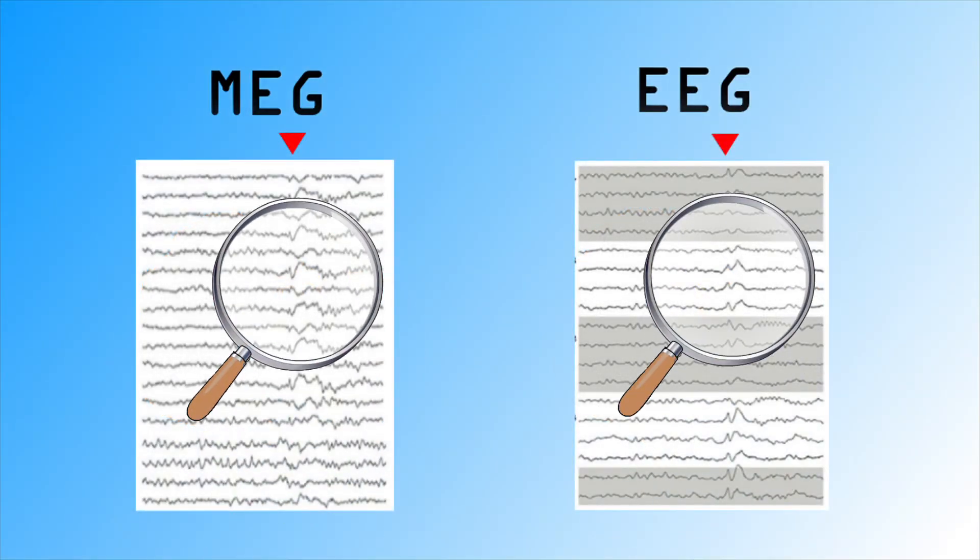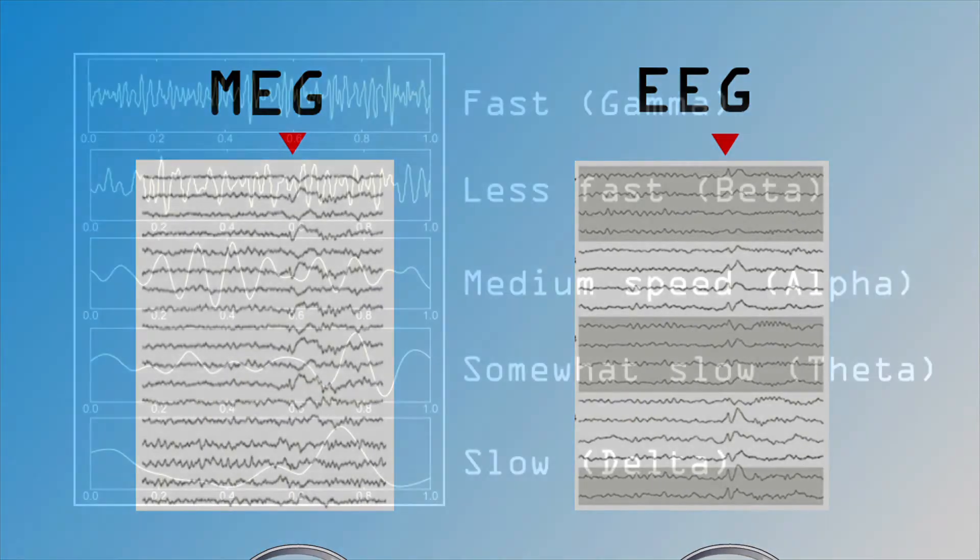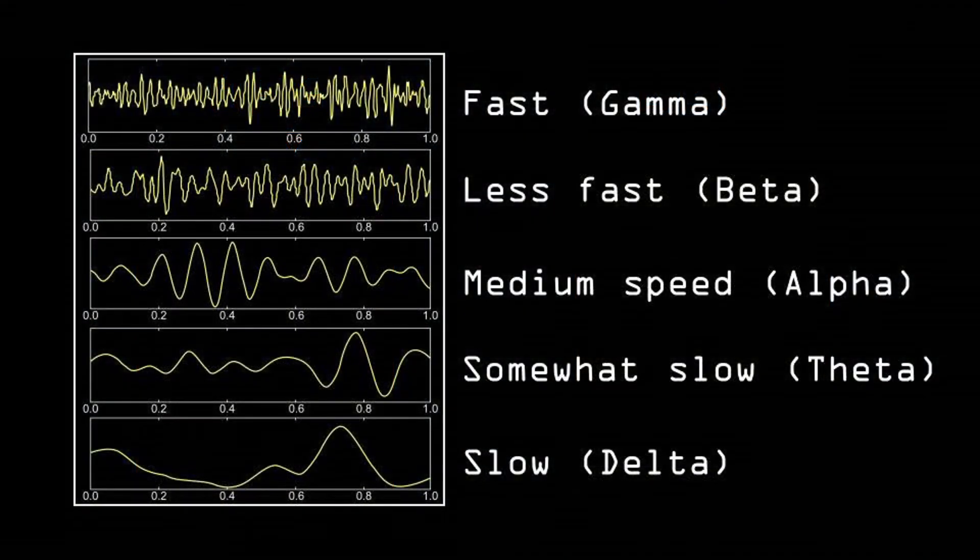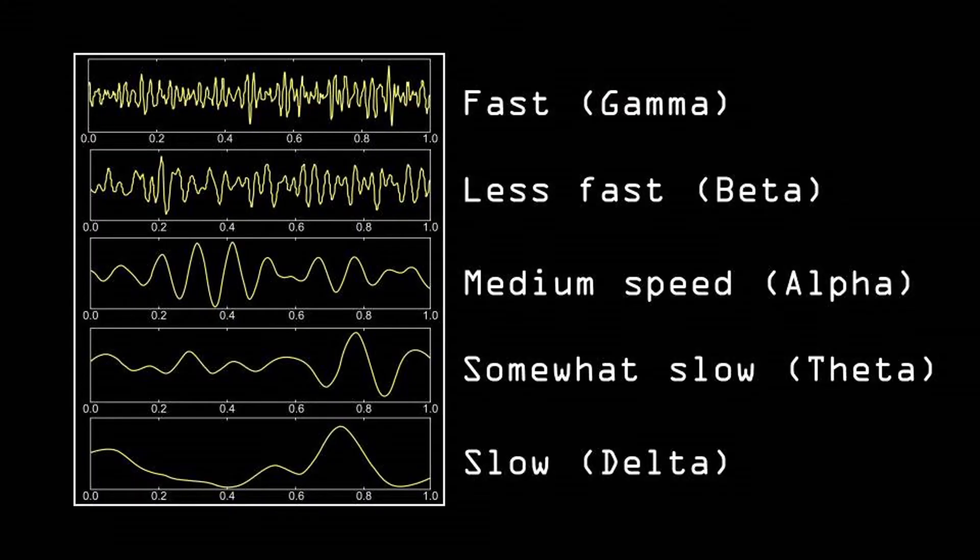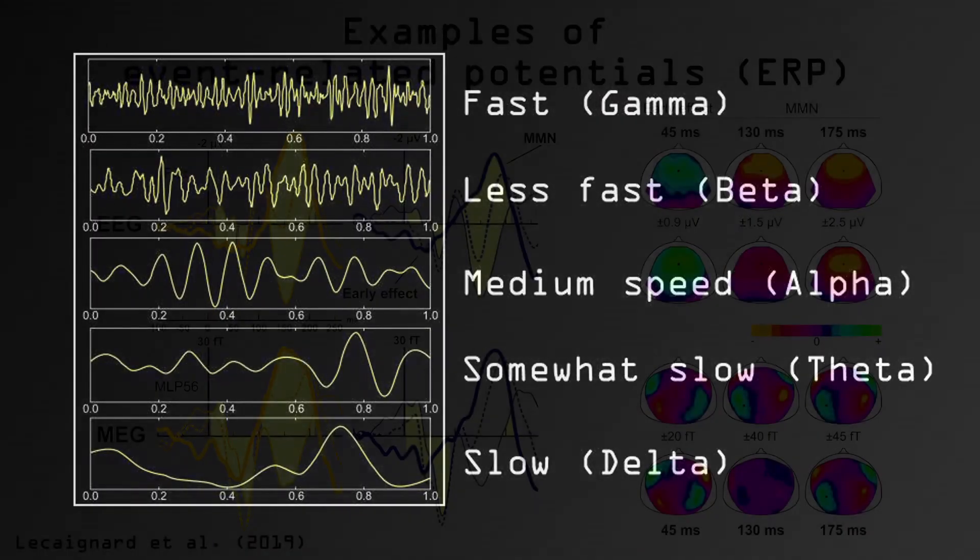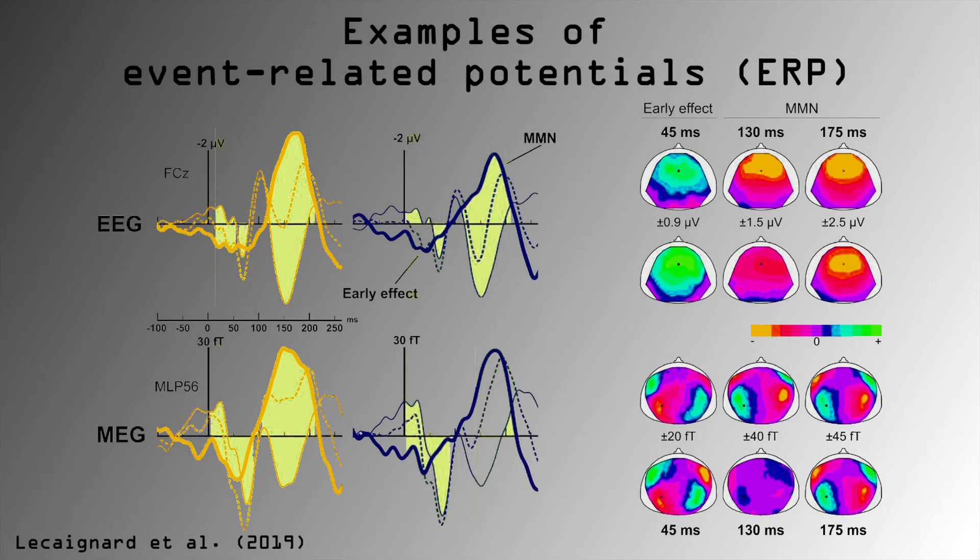Nevertheless, resulting patterns look quite similar and enable us to pick up different rhythms, such as delta, theta, alpha, beta and gamma activity. Additionally, when coupling MEG signals to a stimulus, event-related potentials or ERPs can be recorded, which couple a specific occurrence to a specific brain signal.